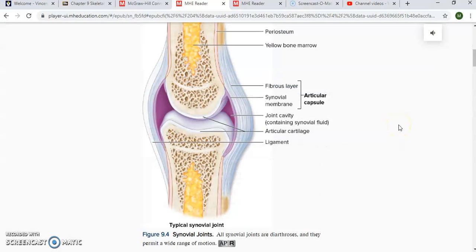So for the ligaments, we should know that ligaments are made up of dense regular connective tissue, and those ligaments, they're going to connect a bone to another bone, and when they do that, they're helping to strengthen or stabilize that joint.